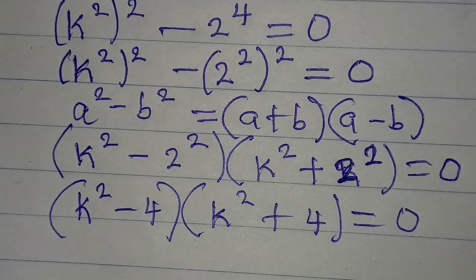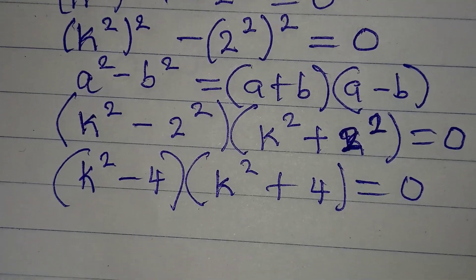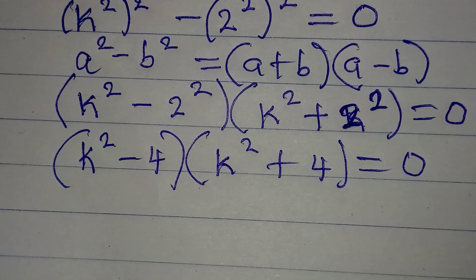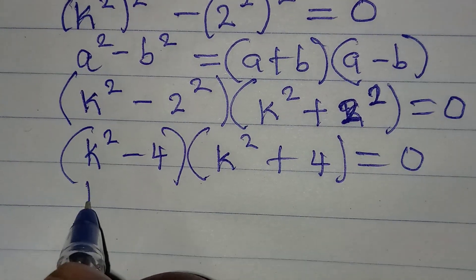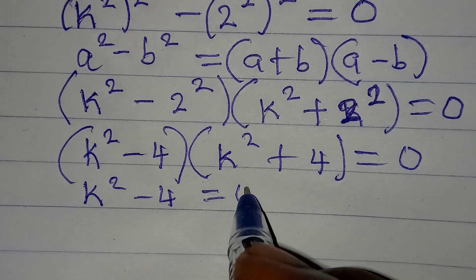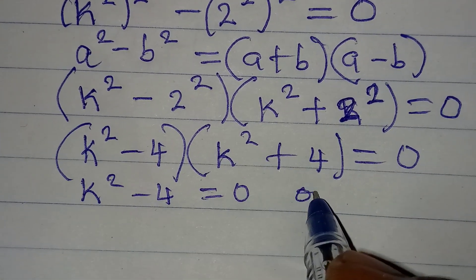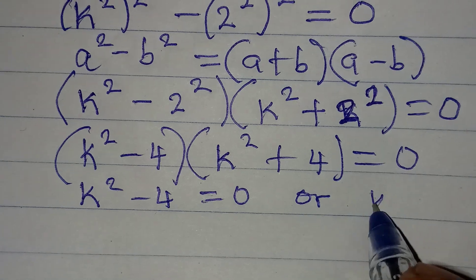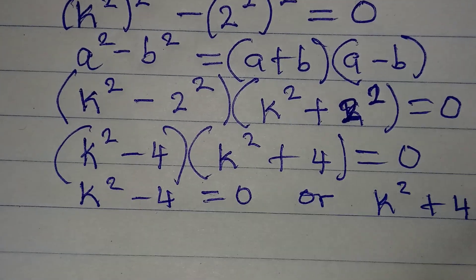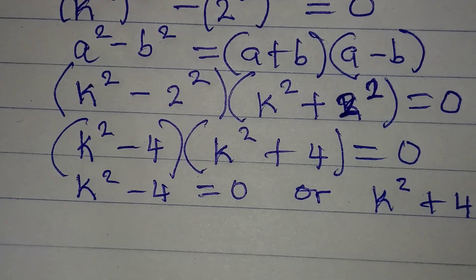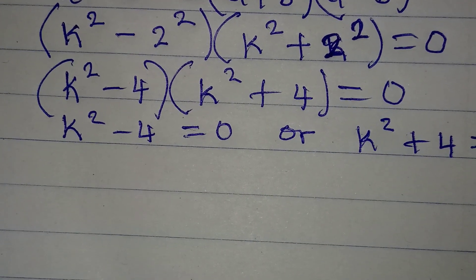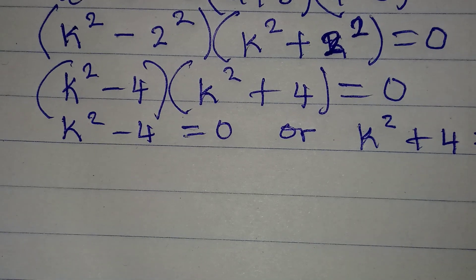Now let's apply our zero product rule, meaning that k squared minus 4 equals zero, or k squared plus 4 equals zero. Remember, our target is to find all four solutions to this problem.